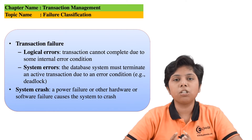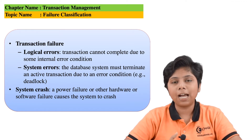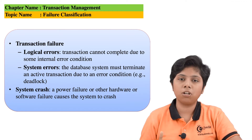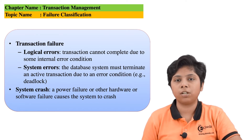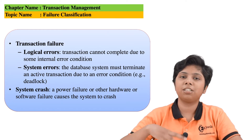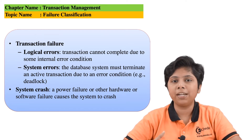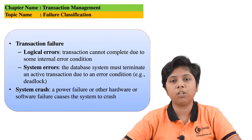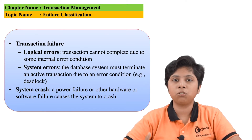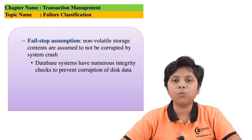The next failure type is a system crash. A system crash means the transaction was performing its normal execution and has gone into some deadlock state, or a state the system cannot afford — for example, it cannot fetch data from the disk or memory, or there is an operating system error, hardware or software failure that we cannot recover from. In such cases we need to abort the transactions, and this type of problem during transaction execution is known as a system crash.